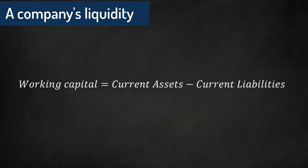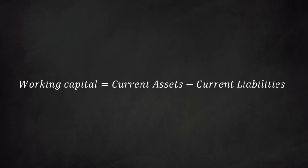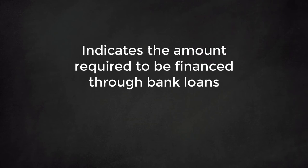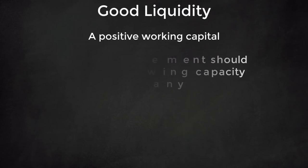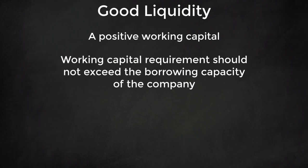A few simple ratios can help us to get a better grip on the company's liquidity. In the traditional definition of working capital, we can use the following formula: Working capital equals current assets minus current liabilities. Most analysts now should use the working capital requirement which deducts from the current assets all the liabilities excluding bank loans. This has the advantage of clearly indicating the amount required to be financed by bank loans. Good liquidity requires a positive working capital, but the working capital requirement should not exceed the borrowing capacity of the company.